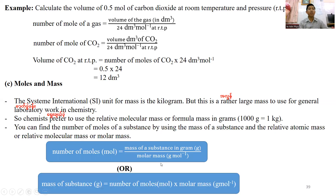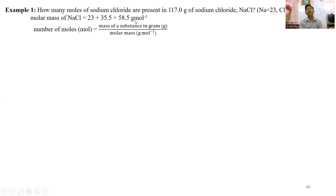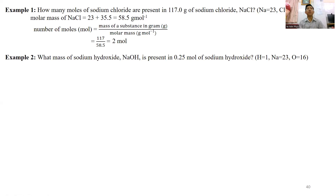How many moles of sodium chloride are present? The first step is to find the molar mass. For example, the mass present is 0.25 moles of hydroxide. So the mass of the hydroxide is moles multiplied by molar mass.